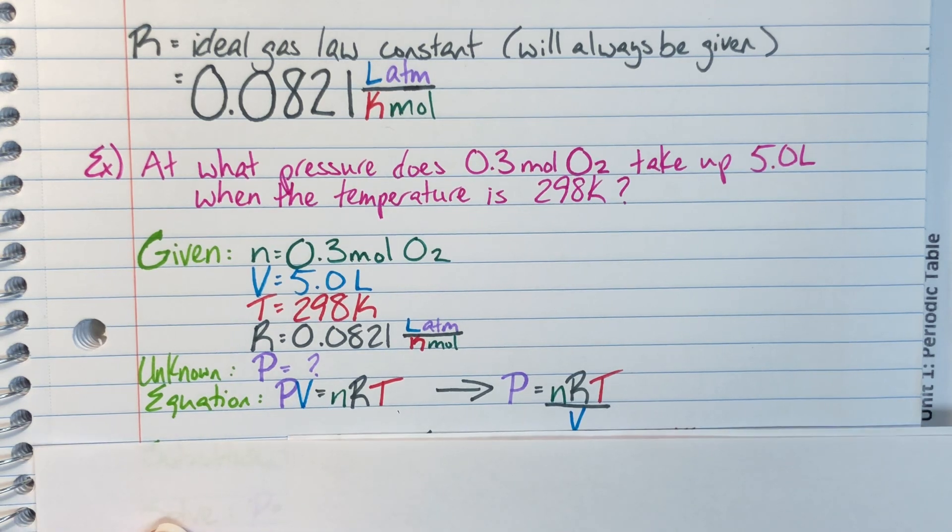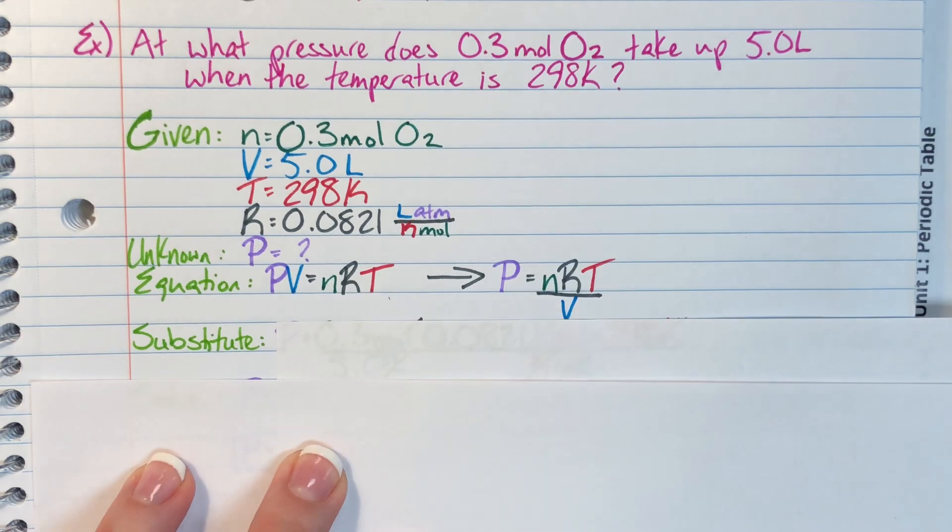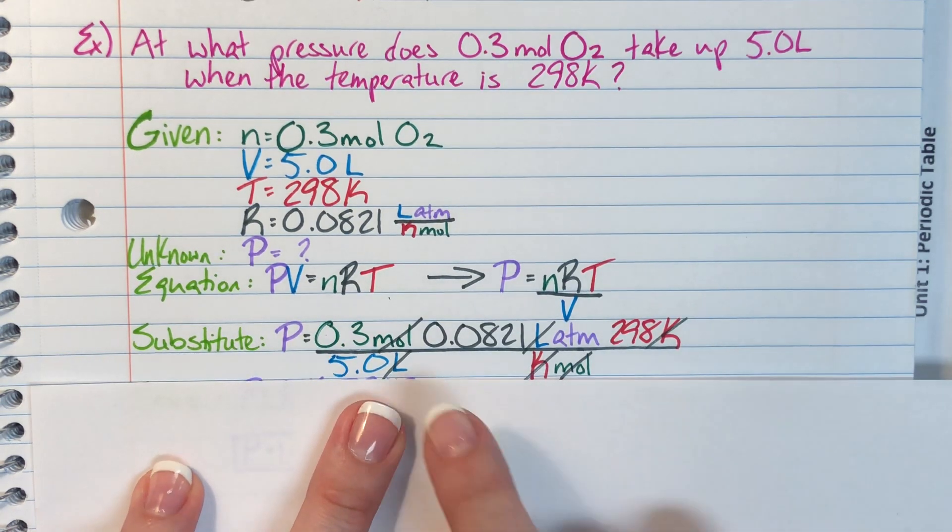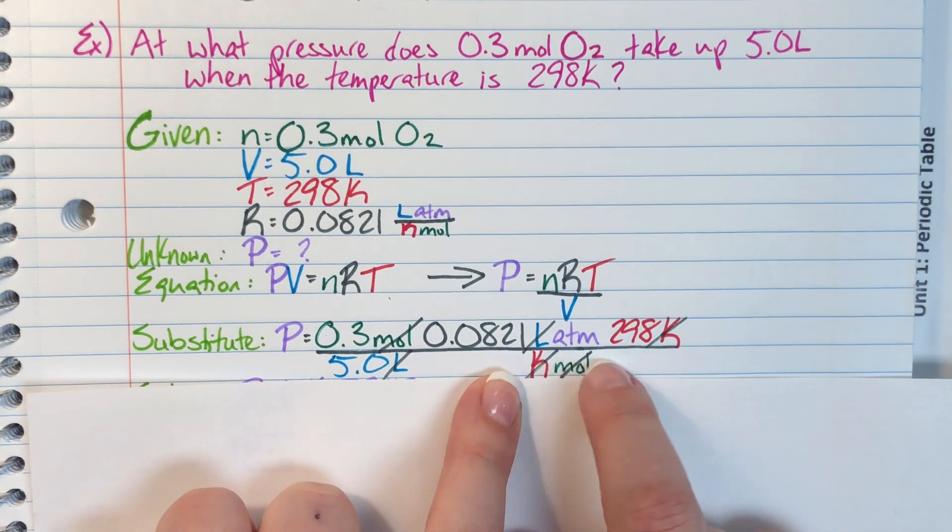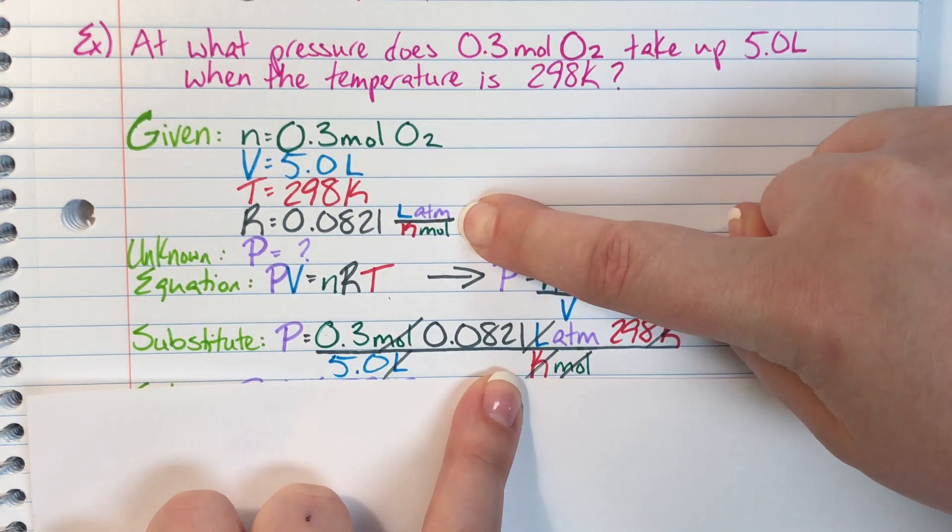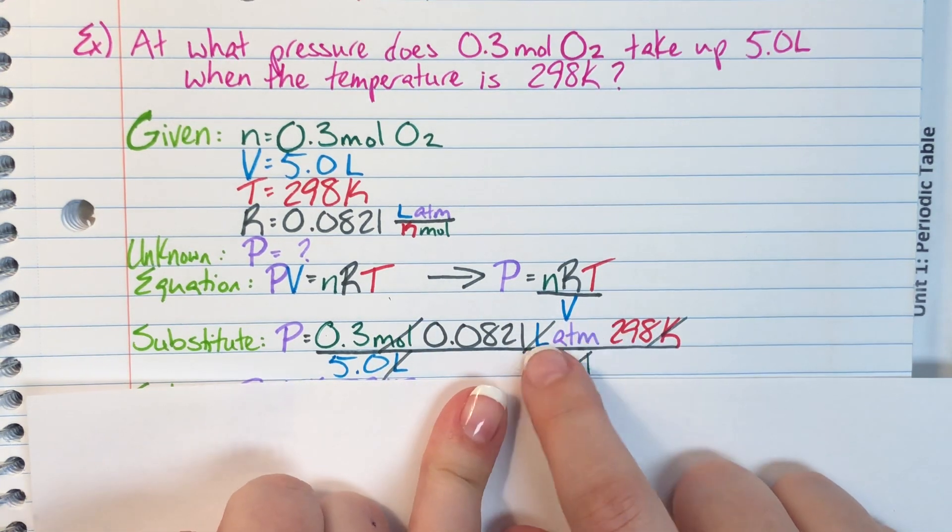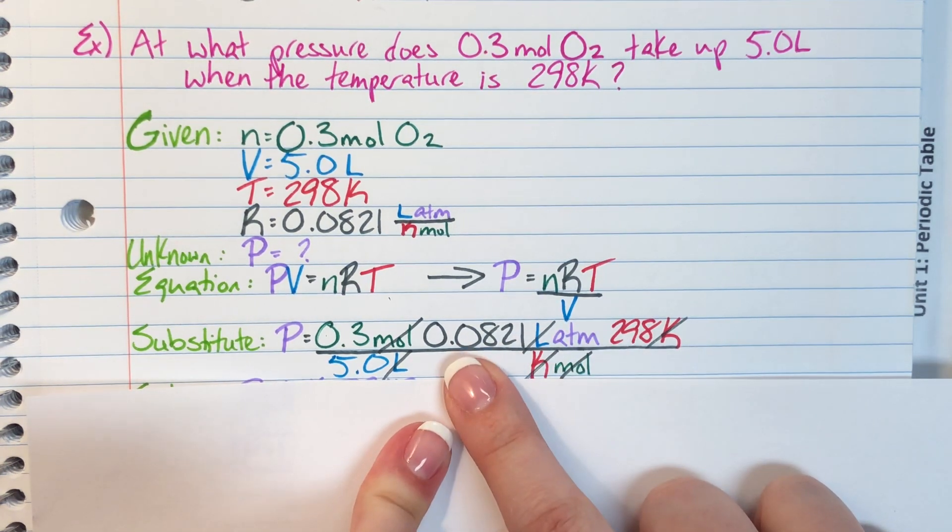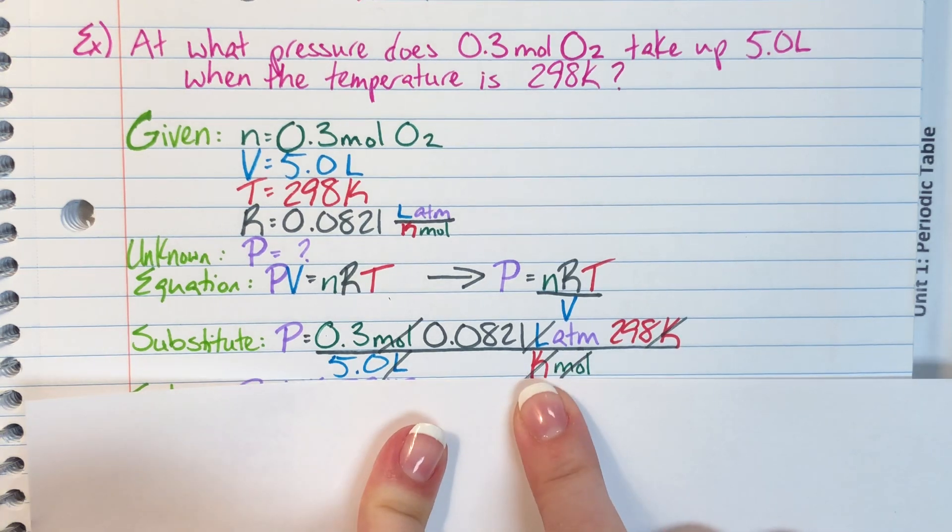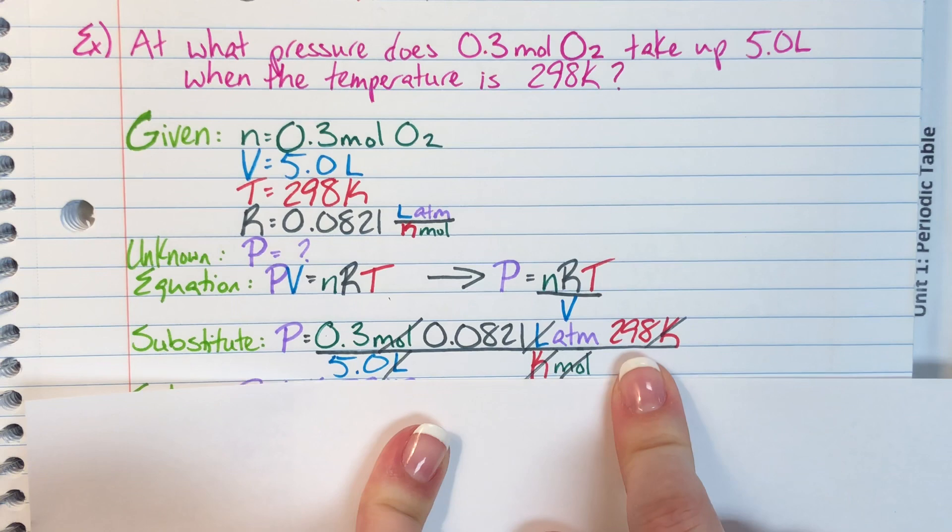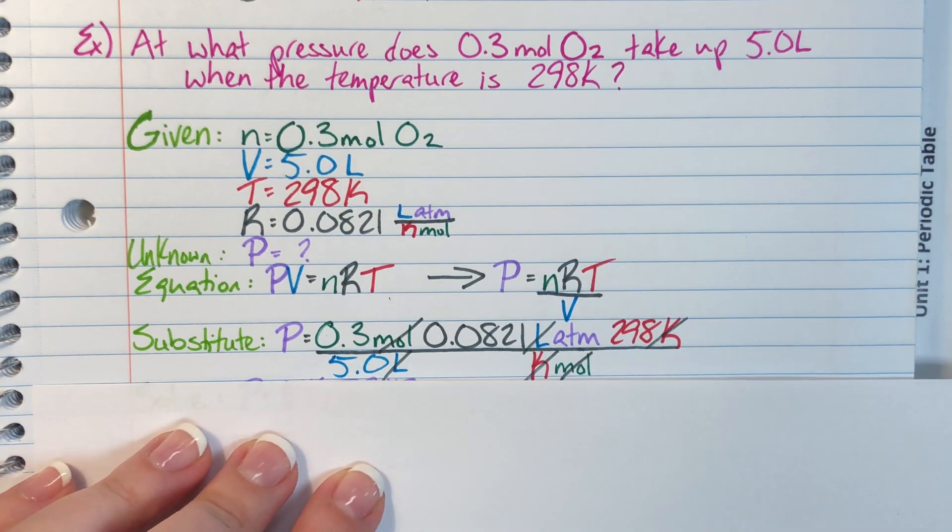After I have my newly isolated equation, I can substitute in my actual values. Pressure is going to be equal to 0.3 moles times 0.0821 liter atmospheres per Kelvin mole times 298 Kelvin, divided by 5.0 liters. Be careful here, we have a unit that has a numerator and a denominator. Liter atmospheres should always be kept with 0.0821. Whichever part of the fraction does not have 0.0821 should have Kelvin mole.